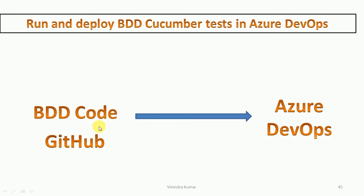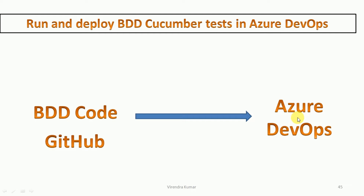Suppose you have the BDD Cucumber Framework in your automation bucket and you have pushed the code to GitHub. GitHub is the source code repository — you can refer to another source code repository, but I am using GitHub. I will connect this BDD Cucumber code through GitHub to Azure DevOps. In Azure DevOps, I will create the build pipeline and the deploy pipeline, and both pipelines I am going to use to run and build the BDD Cucumber framework.